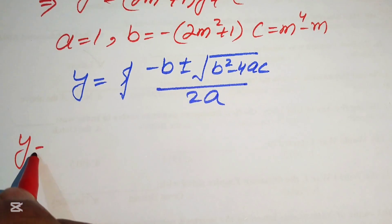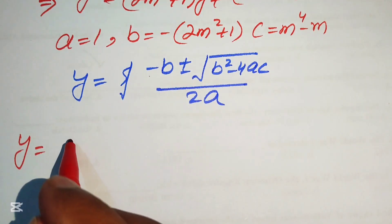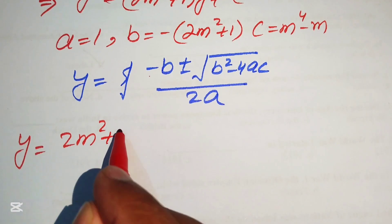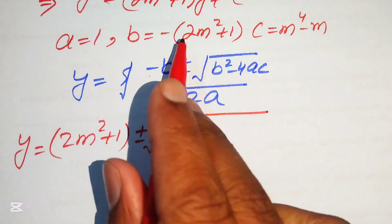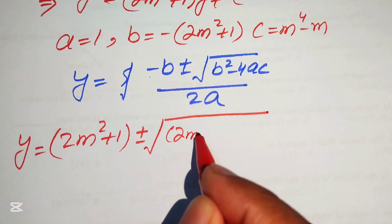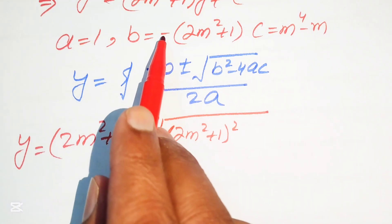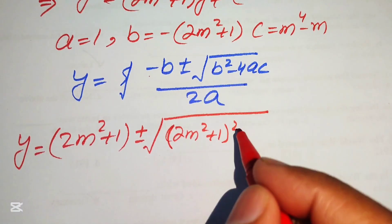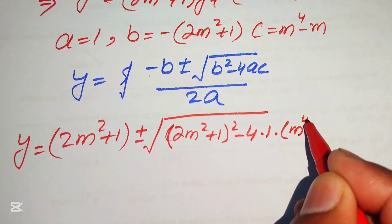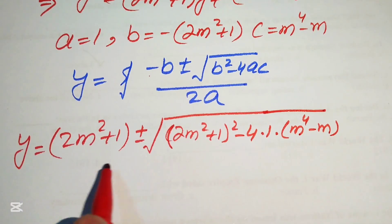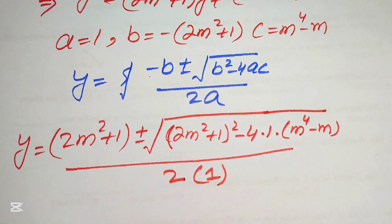Substituting the values: minus b becomes positive (2m² + 1), plus or minus the square root of (2m² + 1)² minus 4 times 1 times (m⁴ - m), all divided by 2 times 1.